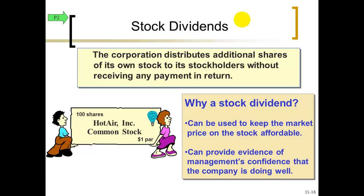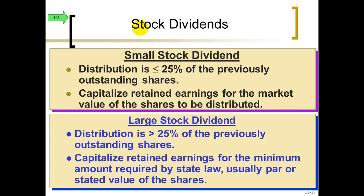Let's pay out dividends again, but this time without cash — maybe the company wants to keep its cash to grow the business. To satisfy shareholders who want something in hand, we give them more shares of stock — called a stock dividend. There are rules for small stock dividends and large stock dividends. A large stock dividend is when you increase the outstanding shares by more than 25 percent; a small one is 25 percent or less.